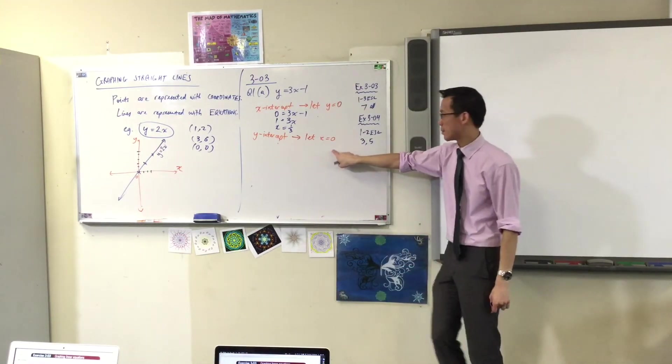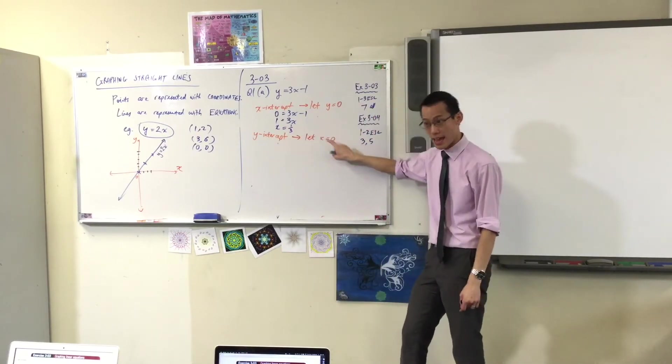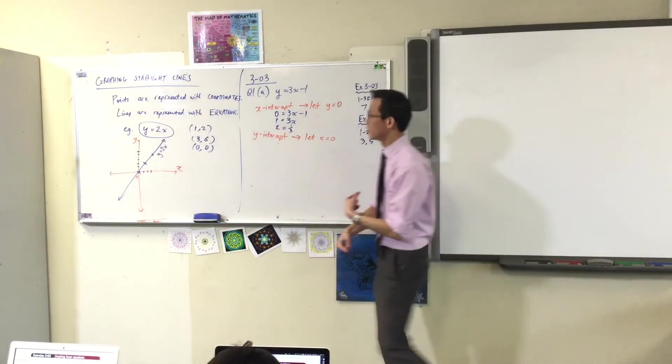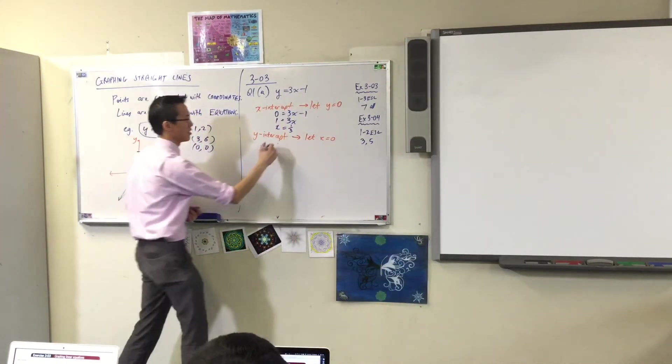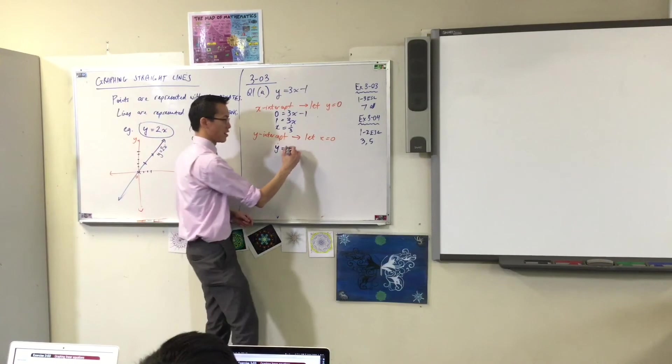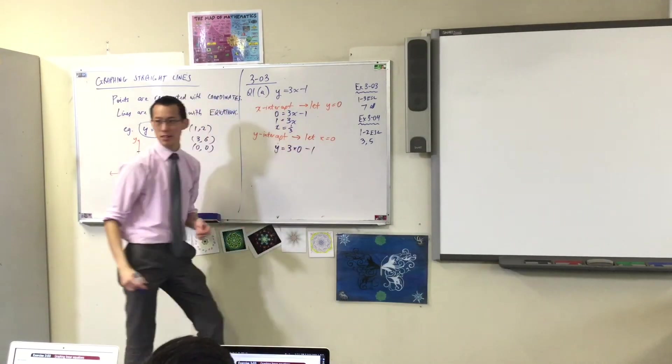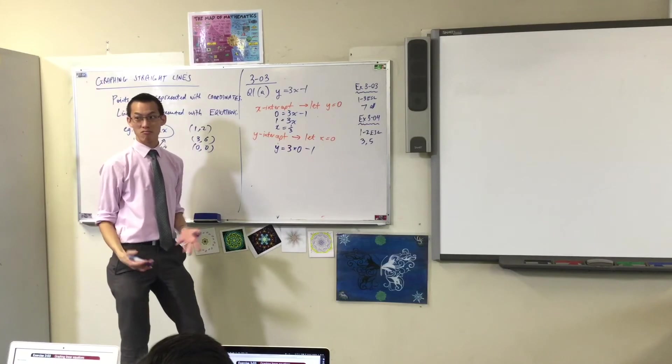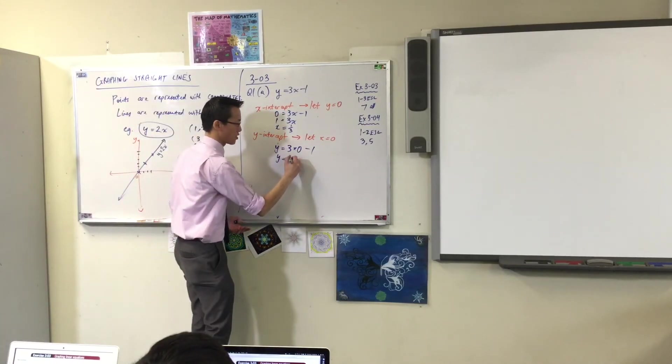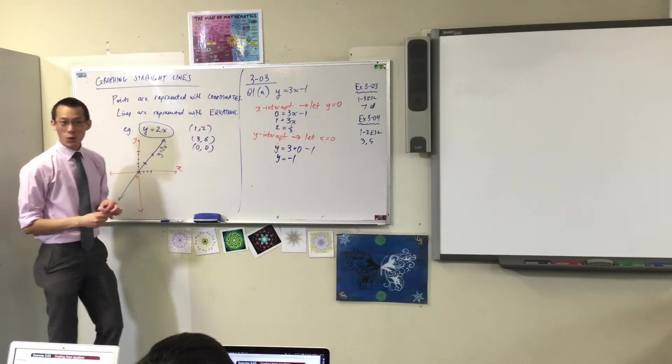Just keep that in your head for a second. Let's do the other intercept. If I want a y-intercept, I'm going to let x equals 0. It's the other way around. So let's do that. It's actually very easy. y equals, I'm letting x equals 0 now, right? So this is 3 times 0 minus 1. What's 3 times 0? 0. So y is just negative 1.